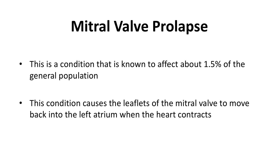A very common condition is called mitral valve prolapse, known to affect about 1.5% of the general population. This condition causes the leaflets of the mitral valve to move back into the left atrium when the heart contracts, and often makes the tissues that make up the valve stretchy, causing it to leak. Normally, this does not become problematic and does not require treatment unless there are other complications. Other contributors include sexually transmitted diseases such as syphilis, high blood pressure, and many types of drugs — both prescribed, over-the-counter, and illicit.